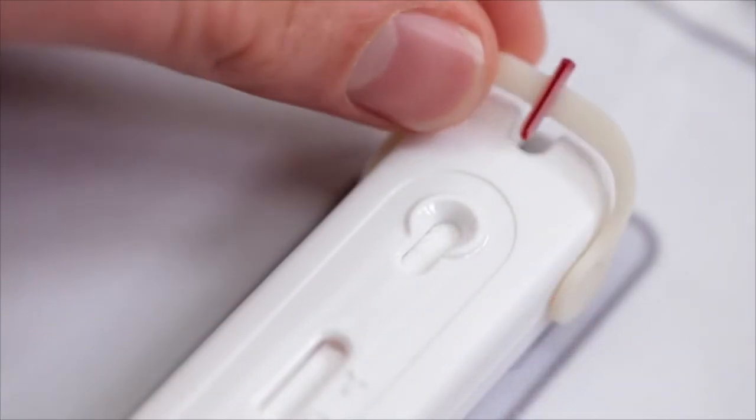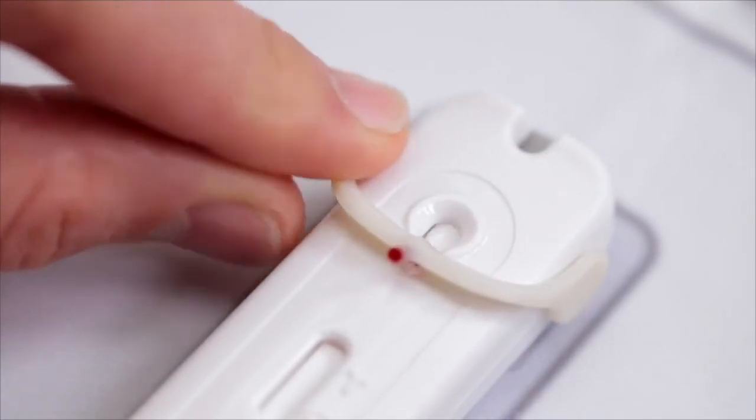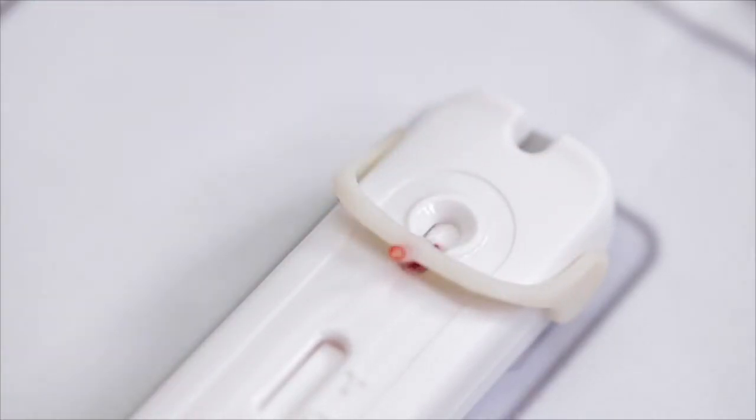Hold the test on the table and flip the tube over using its support arm until it stops. Check to make sure the blood has moved from the tube into the well.